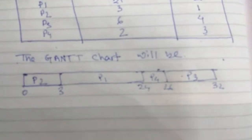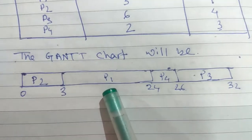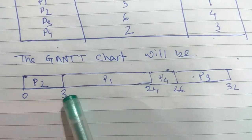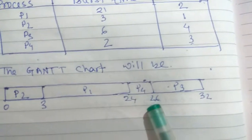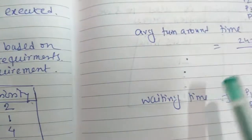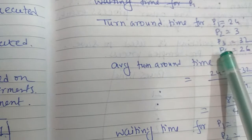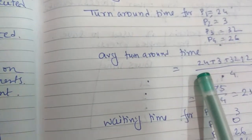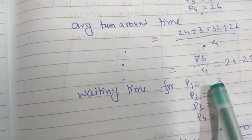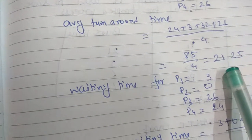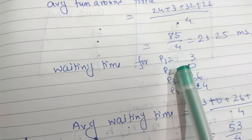Now turnaround time — turnaround time is the process completion time. For P1 it is 24, for P2 it is 3, for P3 it is 32, and for P4 it is 26. Average turnaround time will be (24 + 3 + 32 + 26) / 4 = 85 / 4 = 21.25 milliseconds.